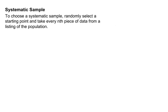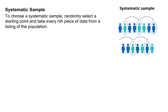Systematic sampling is another method, where you have a starting point and then select every nth person — every fifth person or every tenth person. If you're doing a poll with a list of addresses, you might start at one house and then go to every tenth house after that.